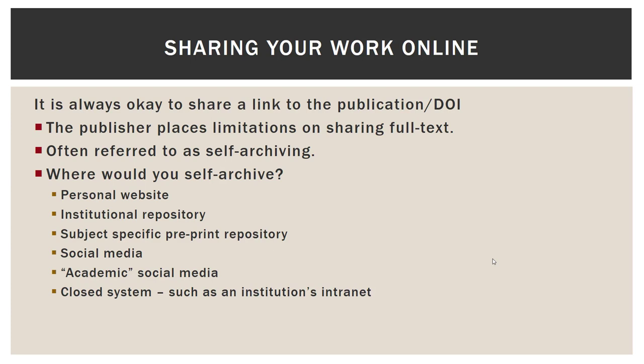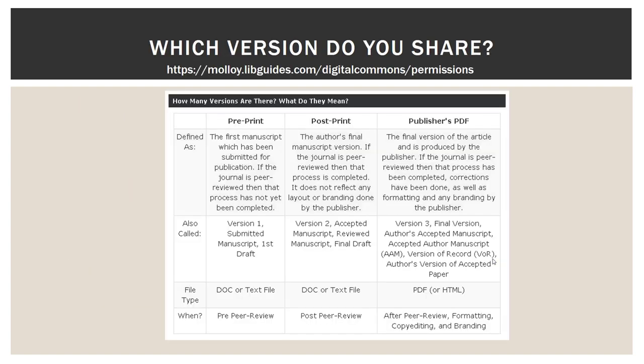Where would you self-archive? Pretty much anywhere that you would share your work online: a personal website, an institutional repository such as Digital Commons at Molloy, a subject-specific preprint repository such as Cornell's arXiv, social media, academic social media such as academia.edu or researchgate.net, or a closed system such as an institution's intranet. Going back to the Wiley example, remember they called the different versions submitted, accepted, and final. This is a chart I have on the Digital Commons LibGuide — you can see the URL towards the top of the page — and depending on the version, or rather the version dictates what you can do with it.